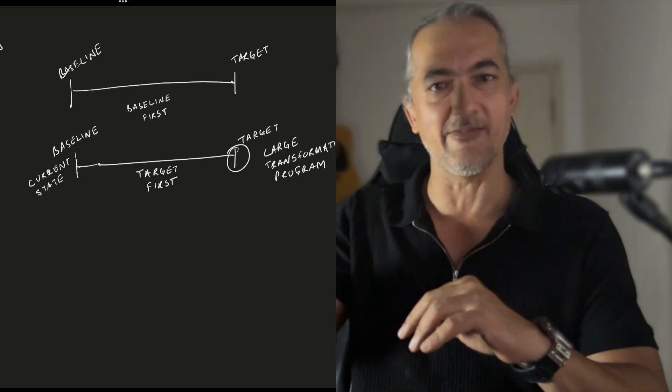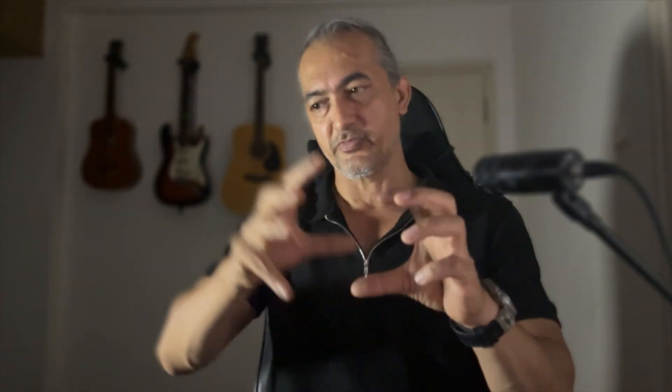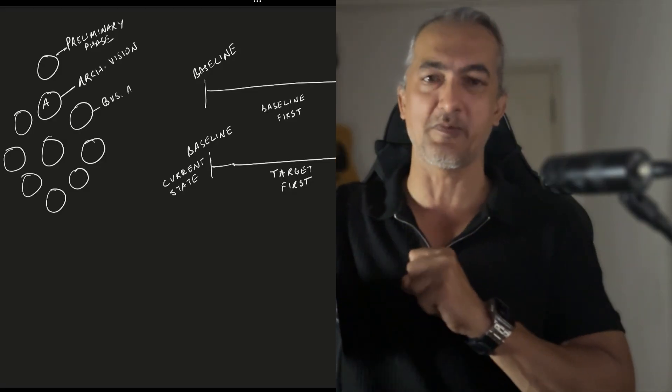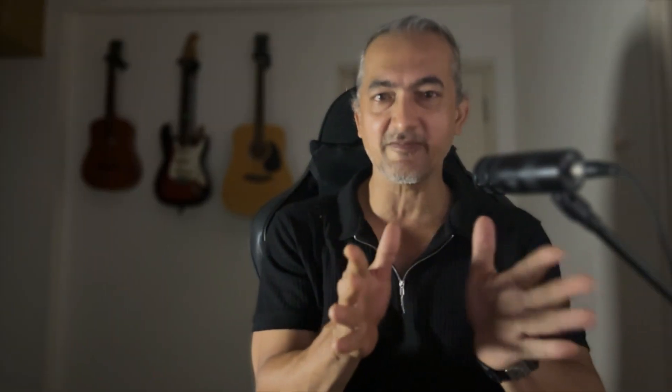In the Architecture Vision phase, at a very high level, you do either baseline first or target first depending on your particular situation. Then you go to Business Architecture, where you deep dive into the business. You study the various business functions, business processes, how they align with each other, who the stakeholders are, what the goals and drivers are, and what the various product lines are. If you're doing target first architecture, it becomes easier because you're specifically focusing on that aspect of the business you're working on.